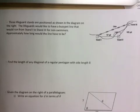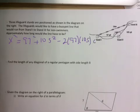So x squared equals 97 squared plus 105 squared minus two times 97 times 105 cosine of 130.